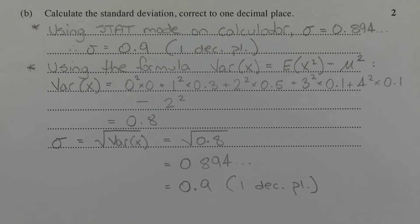To get the standard deviation, we need to take the square root of the variance. So taking the square root of 0.8, we get 0.894 and so on, which rounds to 0.9 correct to one decimal place.